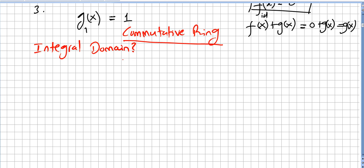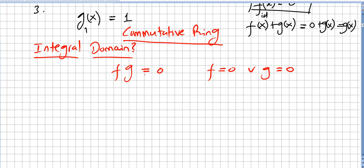Now the question is: is this set under these operations also an integral domain? This is one of those questions where you should really stop the video and think about it. Recall: for an integral domain, if you multiply two functions f and g and get zero, then f must be zero or g must be zero. If that doesn't hold, you have zero divisors and it's not an integral domain. Can you multiply two functions and get zero without either being the zero function?